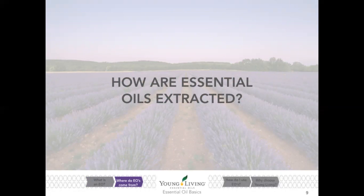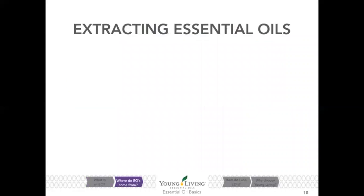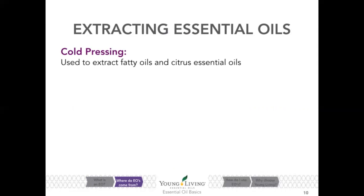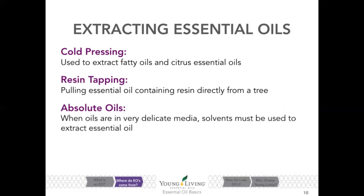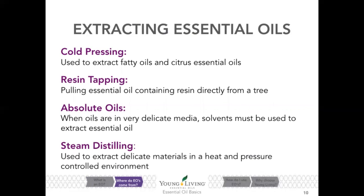How are essential oils extracted? There are four ways: cold pressing, which is used to extract fatty oils and citrus oils; resin tapping, pulling essential oil-containing resin directly from the tree; absolute oils, where solvents must be used to extract the oil from very delicate media; and finally steam distilling, used to extract delicate materials in a heat- and pressure-controlled environment.